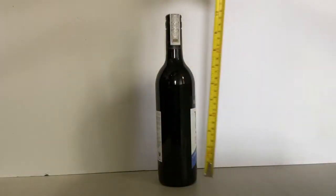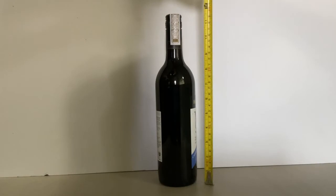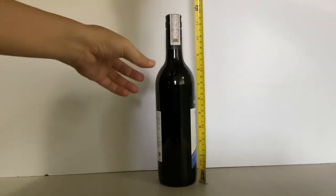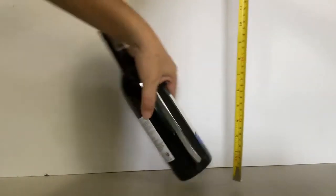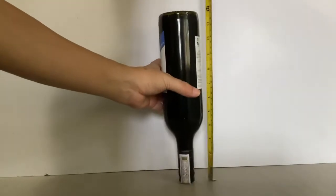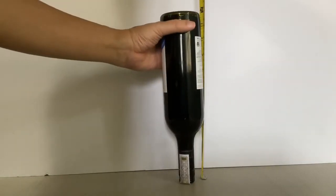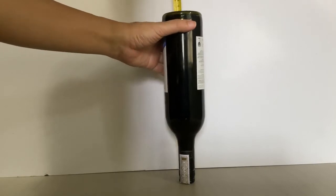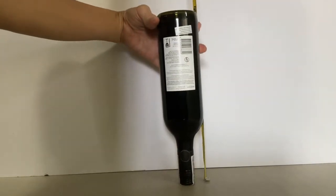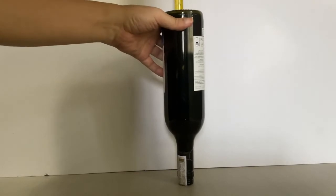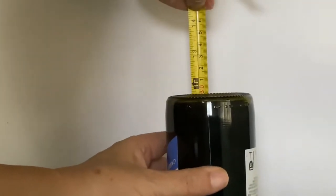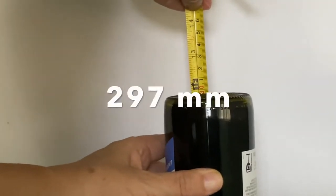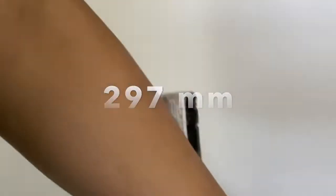For the height, obviously you can't get a good reading this way when the bottle is upright. The best way is to turn the bottle upside down on the table. Make sure the measuring tape is flush with the bottle and the tip is on the table along with the mouth of the bottle. Take a reading at the tip of the bottom of the bottle. Here I got 297 millimeters.